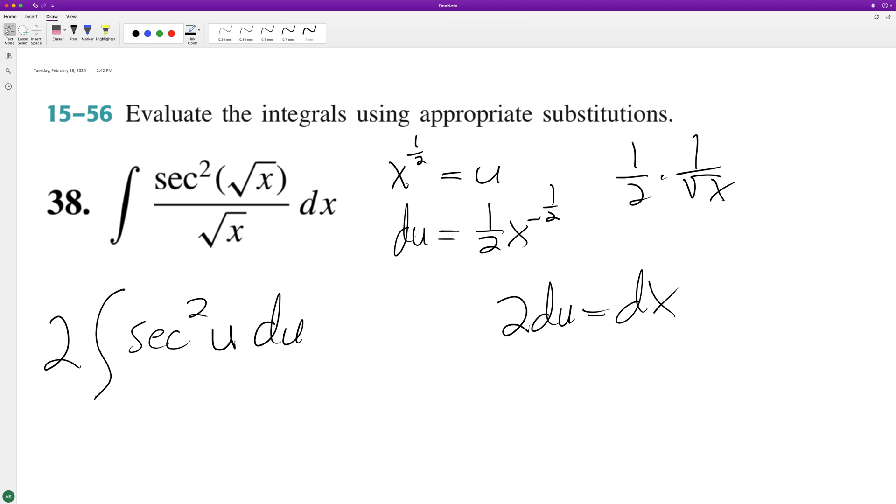So we integrate this and the integral of secant squared is tangent. So we have two tangent u plus c. Substitute back in for u, we have two tangent, and then it's the square root of x plus c. That's it.